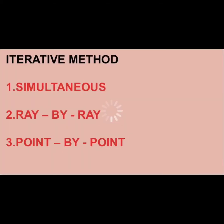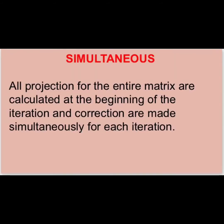There are three subtypes of the iterative method: simultaneous, ray-by-ray, and point-by-point. In the simultaneous method, all projections for the entire matrix are calculated at the beginning of the iteration and corrections are made simultaneously for each iteration.